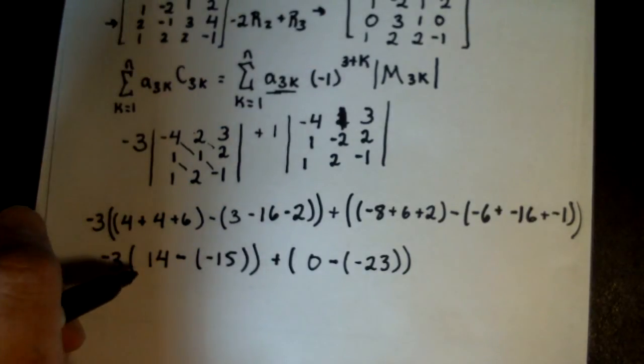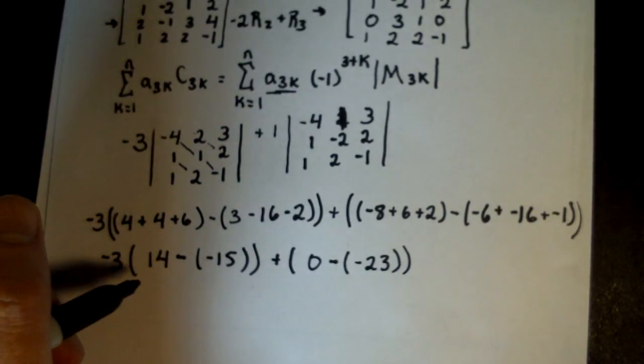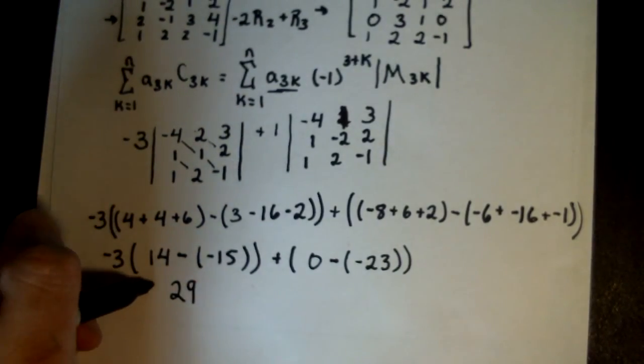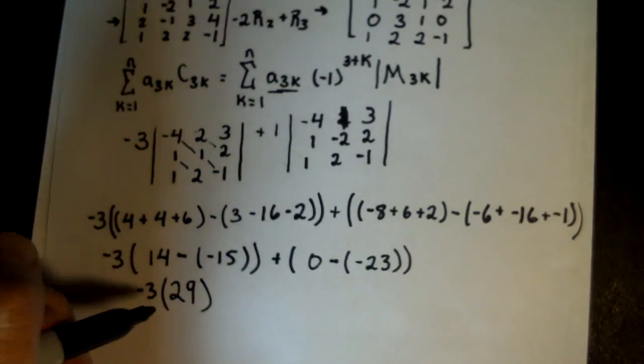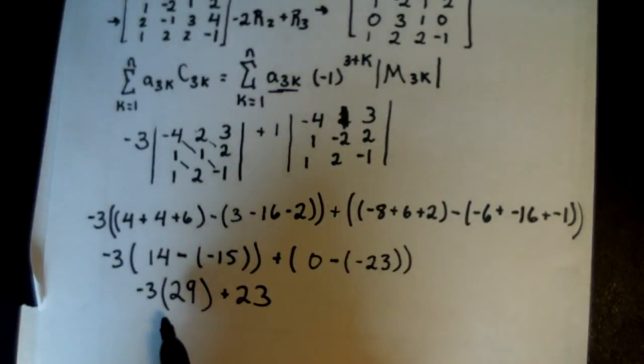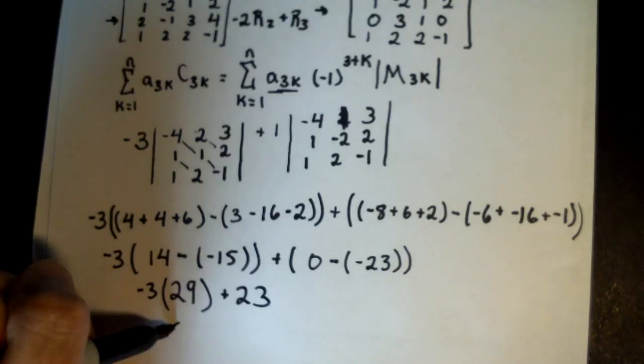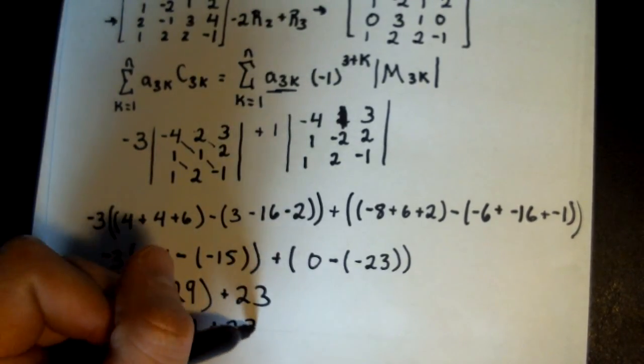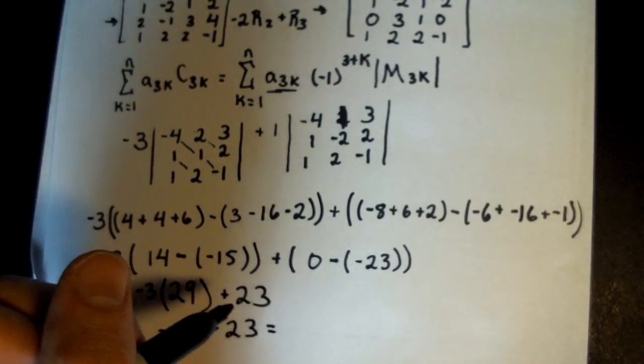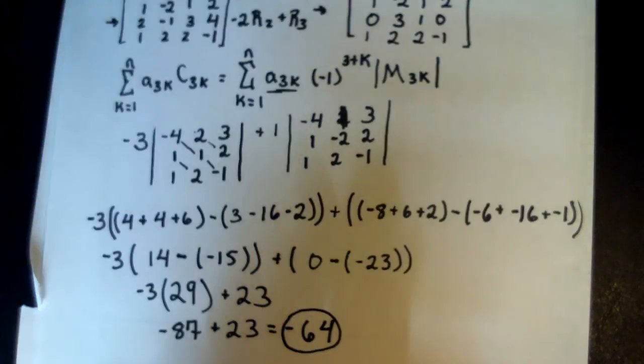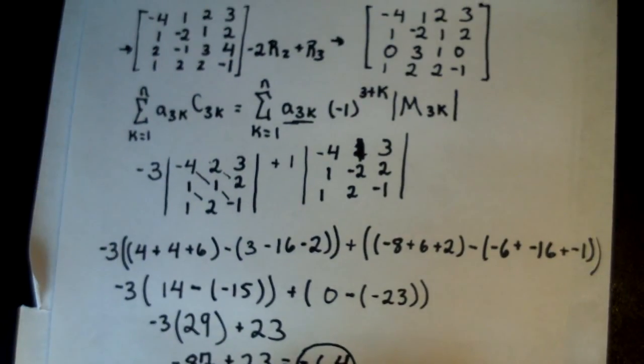Now let's simplify more. We have 29 here, or excuse me, yep, 29. And we have that multiplied by negative 3. And we have plus 23 here. We have negative 3 times 29 as negative 87. And plus 23 is equal to negative 64. And that is the determinant of this 4x4 matrix.